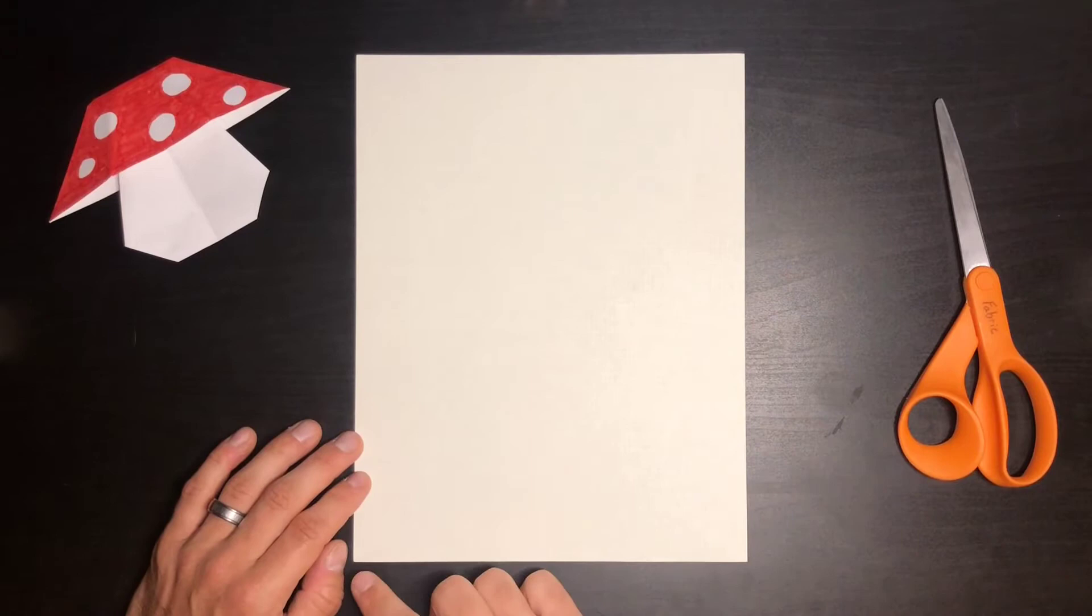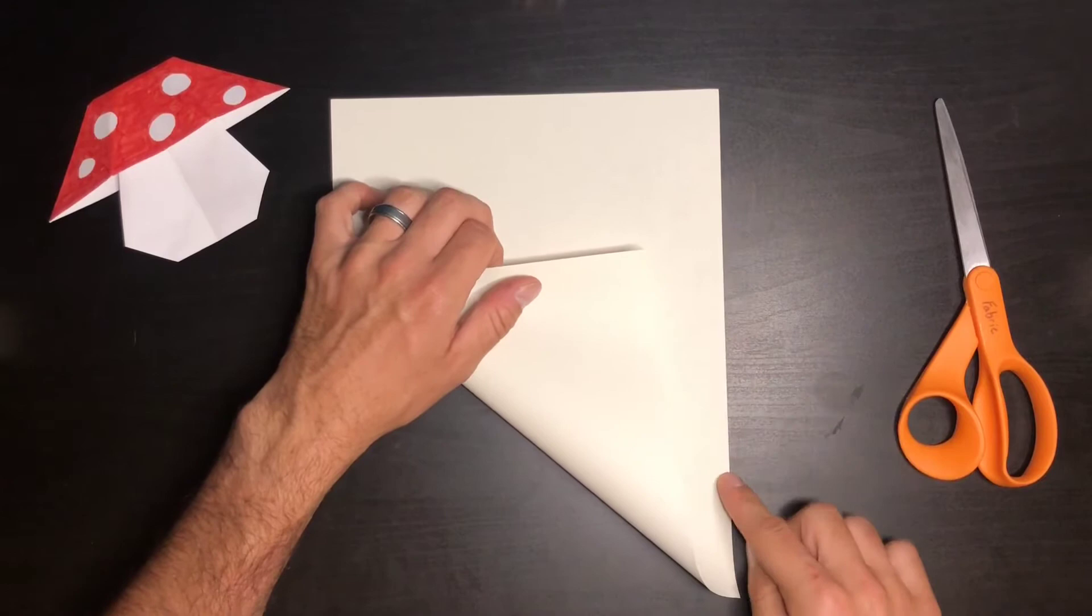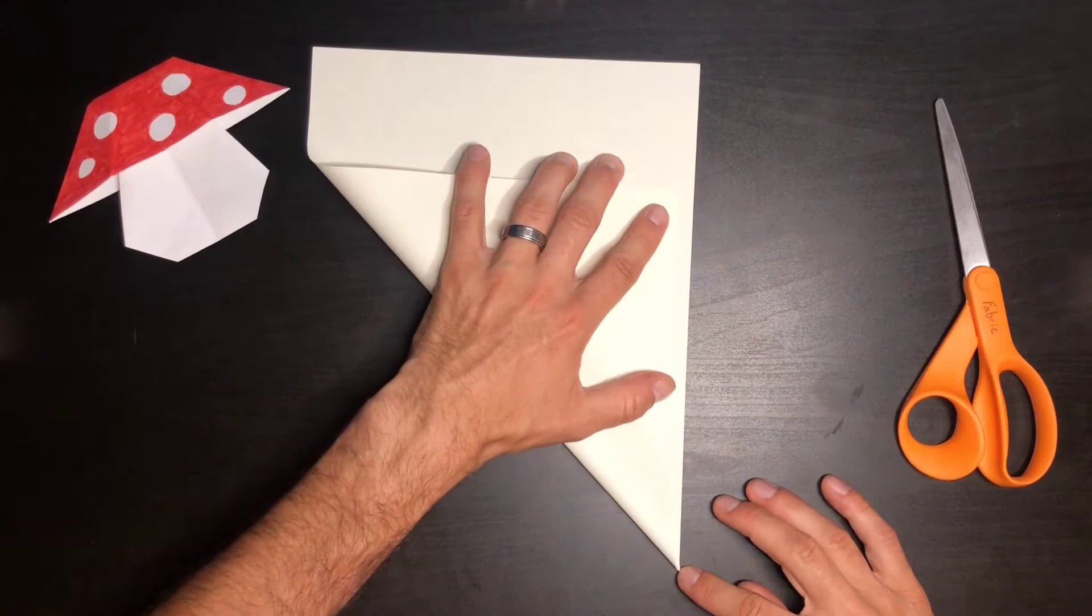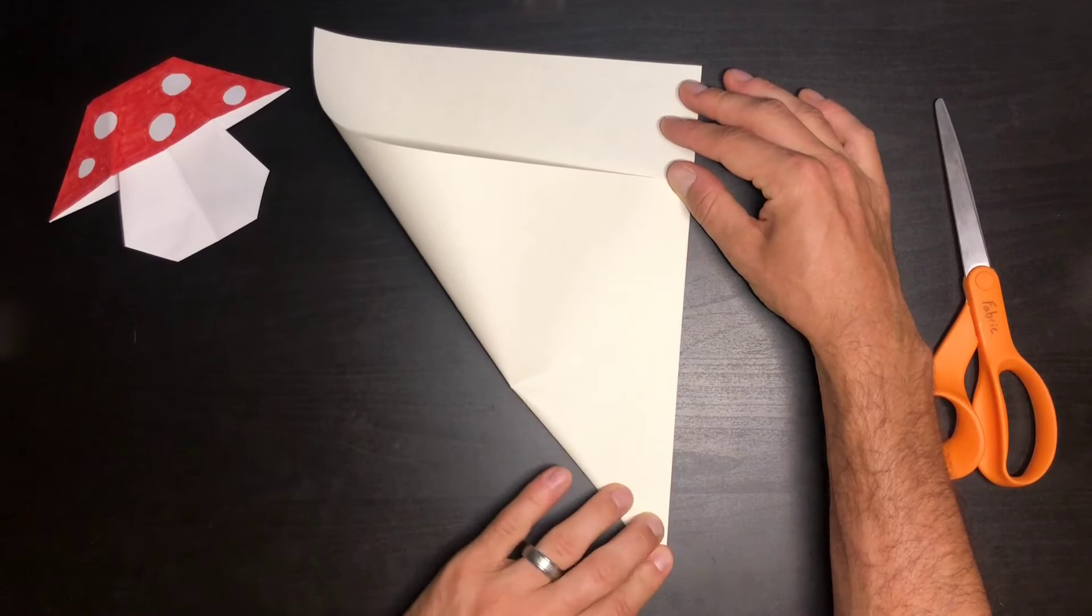So first step, we're going to turn this piece of paper into a square. We're going to take this corner, I'm going to fold it over to here so that this edge lines up with this edge. And we want to do it so that this corner right here is nice and not too far over, not too far back. Let's see if I can do that right here. Perfect.